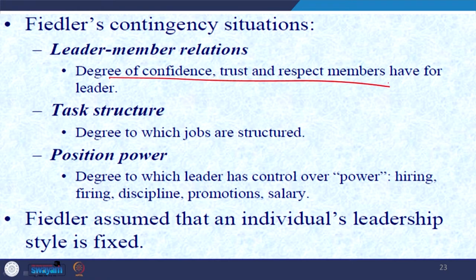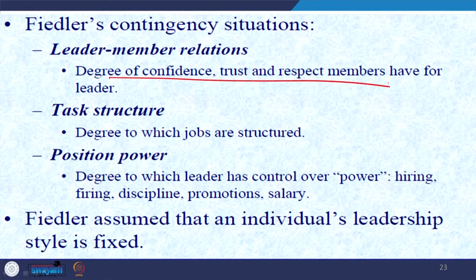Task structure refers to the degree to which jobs are structured, well defined, and tasks are allocated with specific responsibility so that subordinates understand the nature of responsibilities assigned to them. The third variable, position power, is the degree to which the leader has control over power — that is, the leader exercises power while hiring, firing, maintaining discipline, assigning responsibilities, and deciding on promotions, salary, or performance appraisal — based on the authority in the organizational hierarchy.